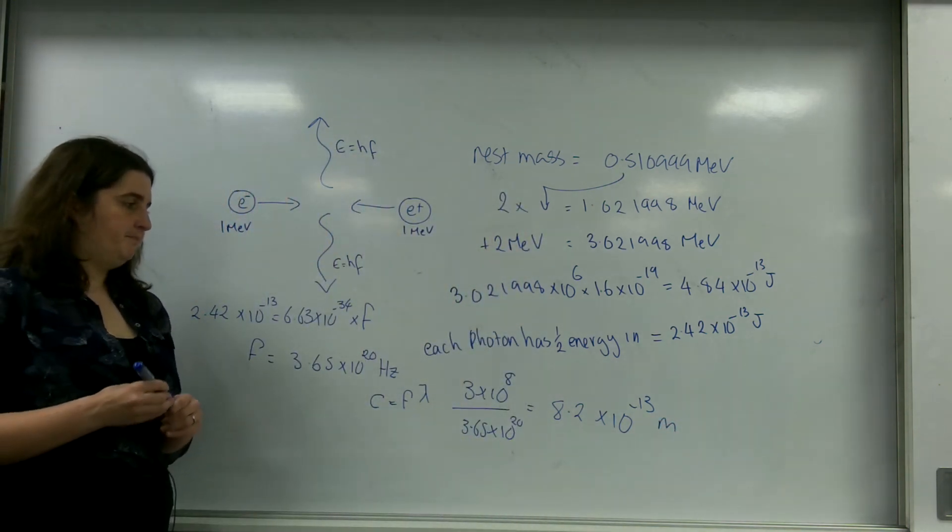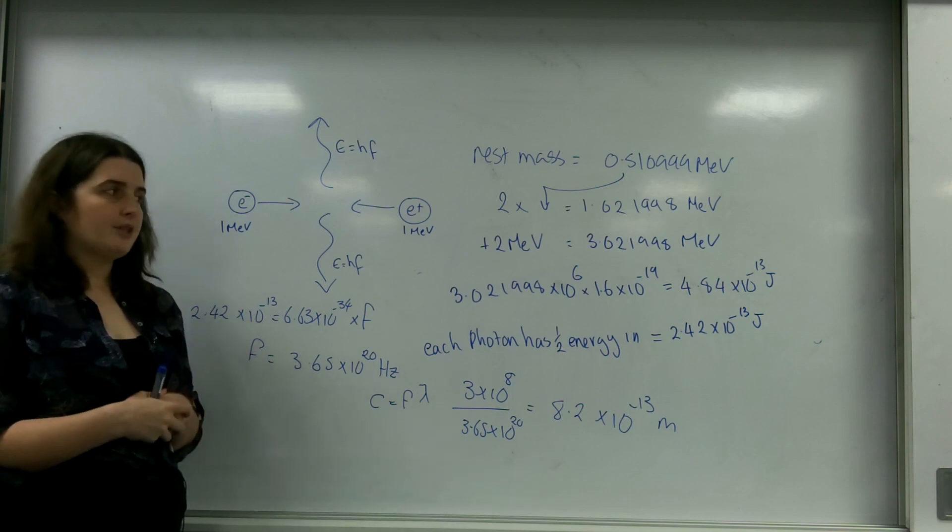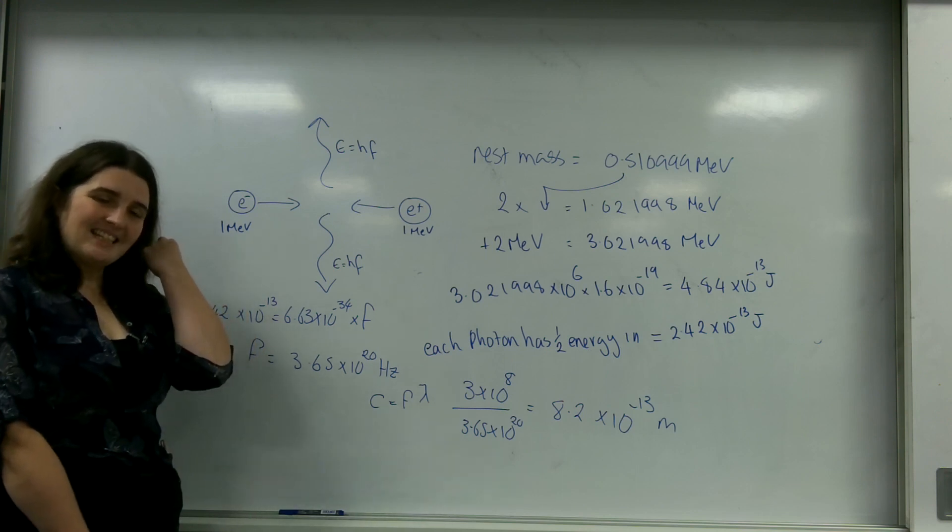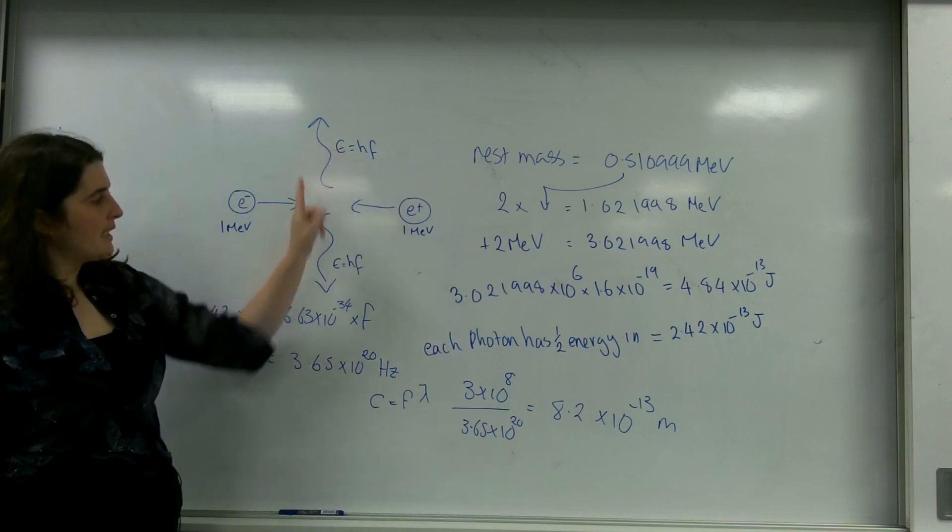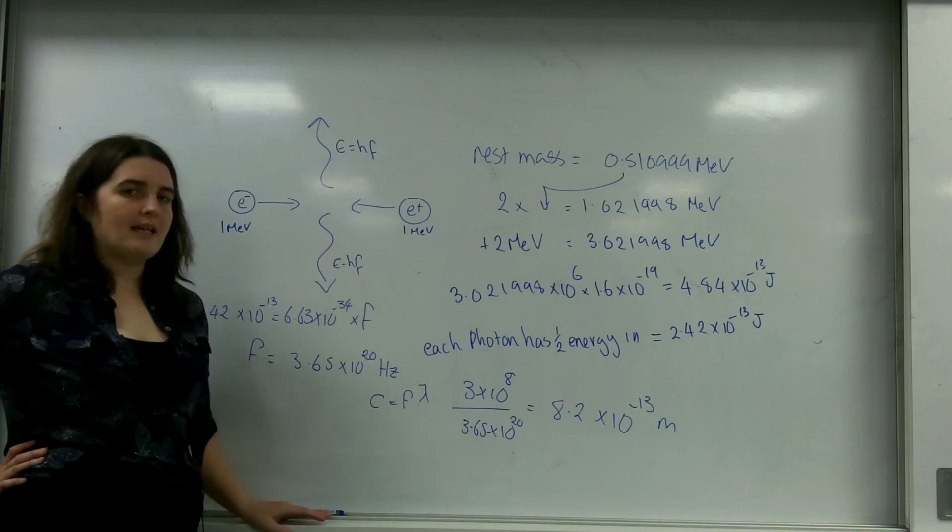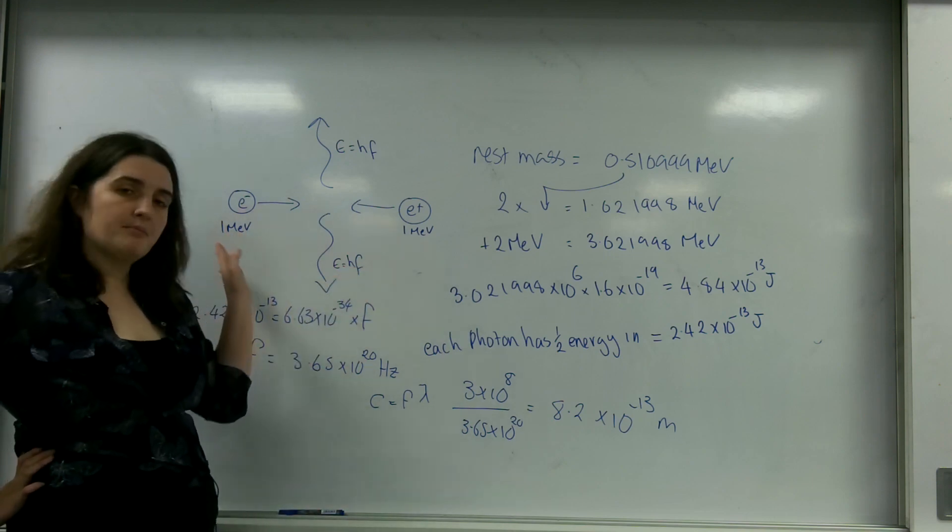Okay. So this is annihilation. The process where a particle and an antiparticle meet, and two photons are emitted perpendicular here, with half the total amount of energy that went in. Now, it's important to note, I've had both of these moving to collide. You might have a particle that's not moving.